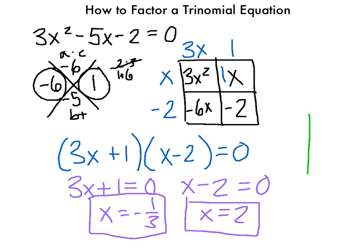We talked about why we have two answers — it's because the equation represents a parabola. On a graph, the parabola crosses the x-axis twice, and wherever it crosses is where our answers are. These x-intercepts are going to be very important in the next chapter. Hopefully this helps, and I'll be posting another example of when the equation does not equal 0 and how we make it equal 0.